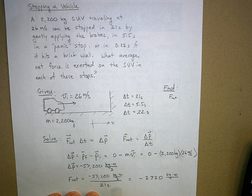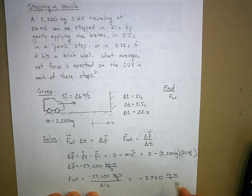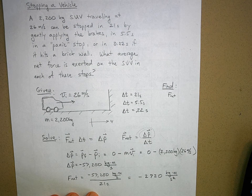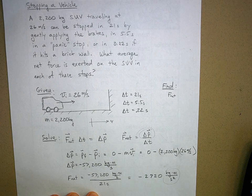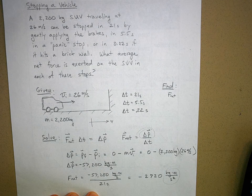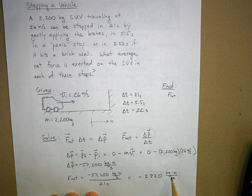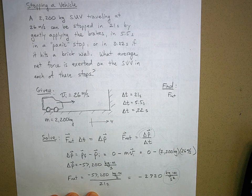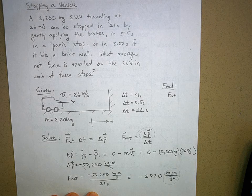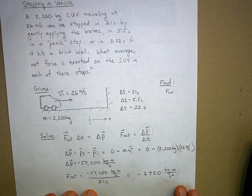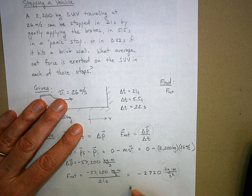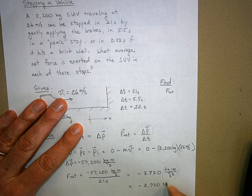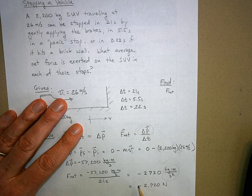Kilogram meters, and then you have seconds multiplying by seconds, you get seconds squared. Does that make sense? Because what is this collection of fundamental units called? It's a mass times the units of acceleration, so it's a newton. So we can say that this is negative 2,720 newtons. That's my first answer.